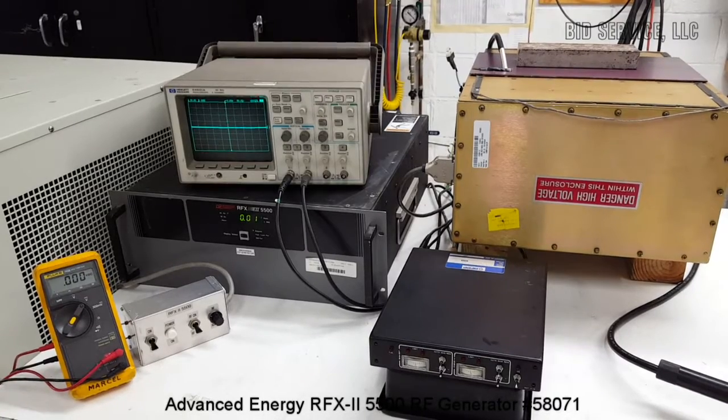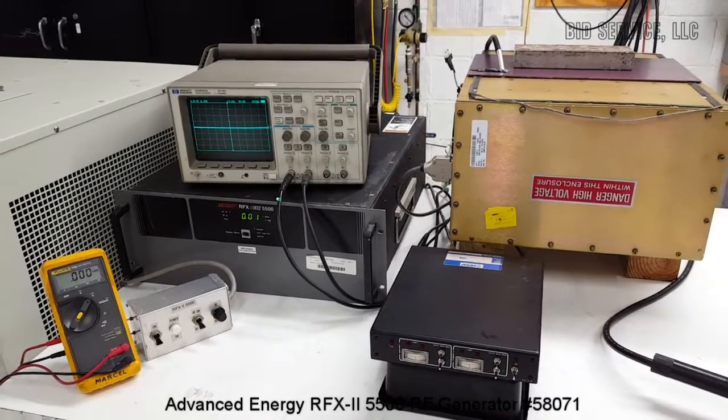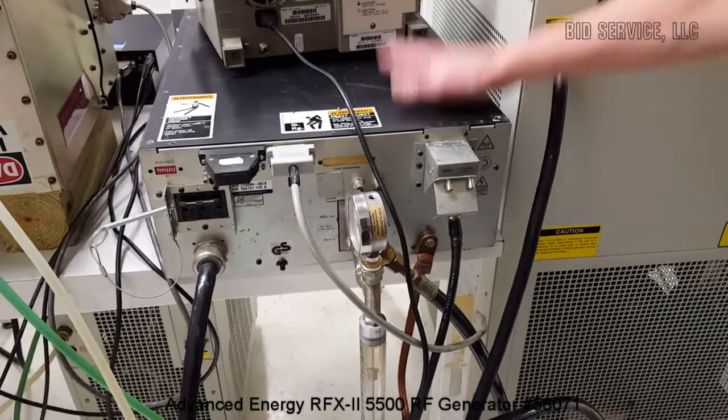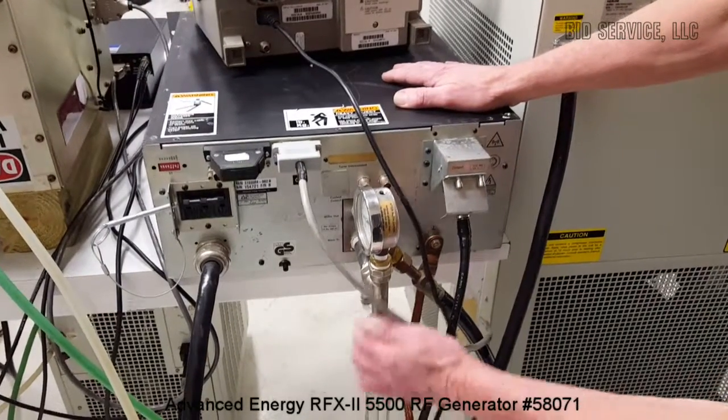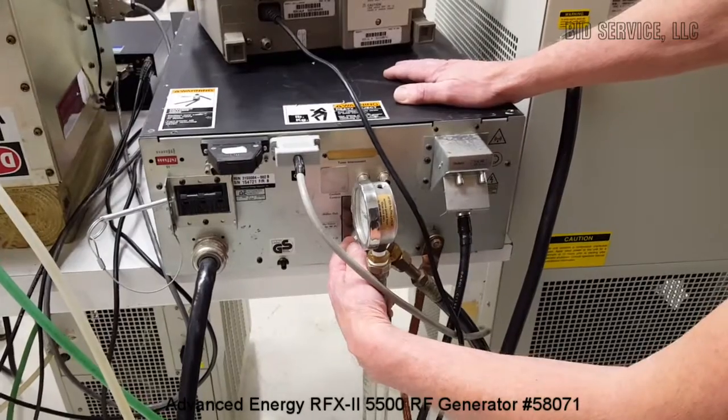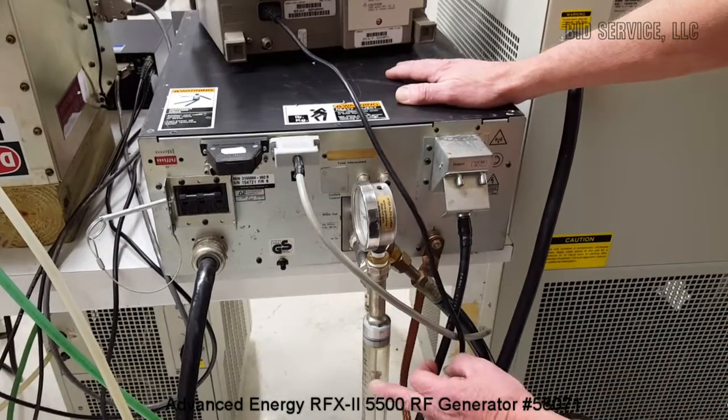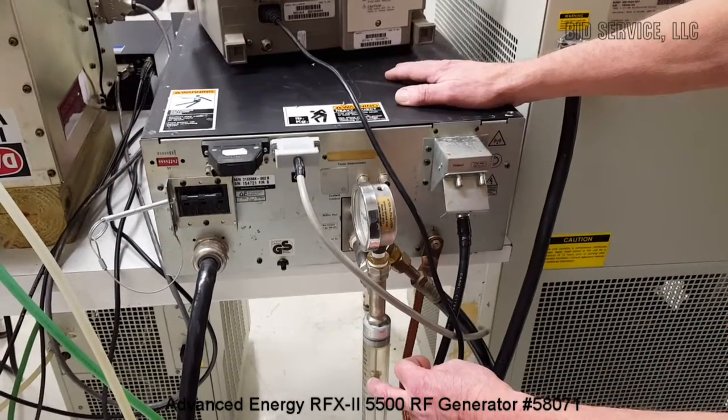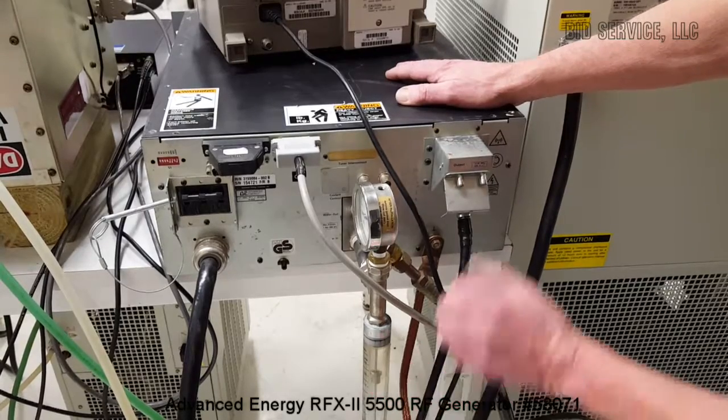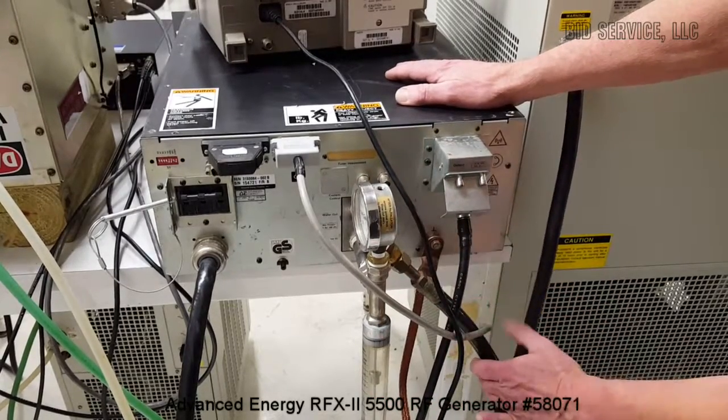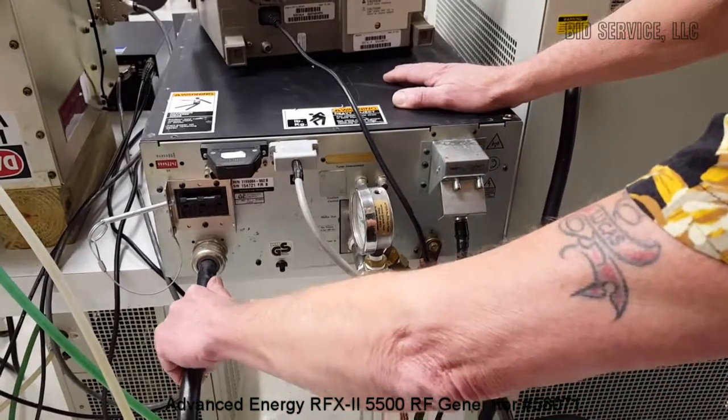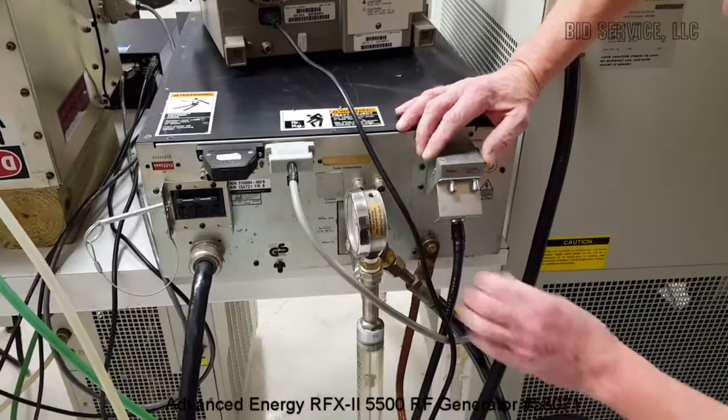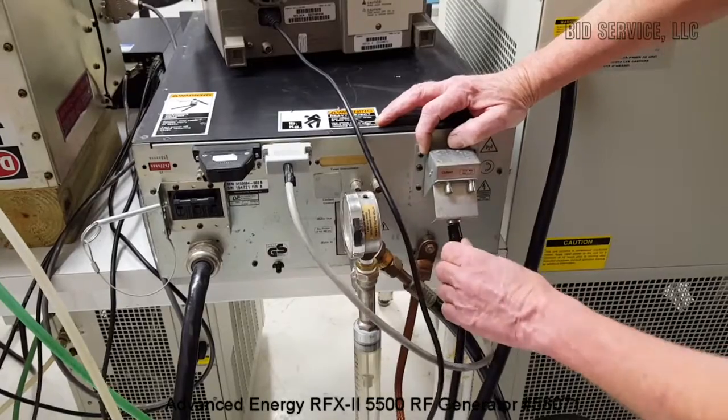Now let's take a look at the connections in the back. The connections on the RF generator are as follows. Here's where we have our water line going in. Our flow gauge says 4.5 gallons per minute, which is acceptable. This is the return line for our water to our chiller. Here is our power connection and here's the actual RF output plug underneath.